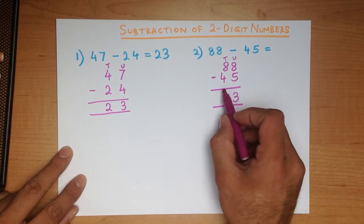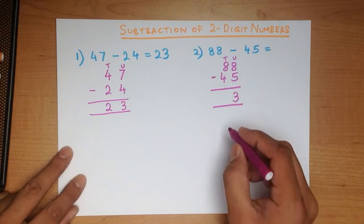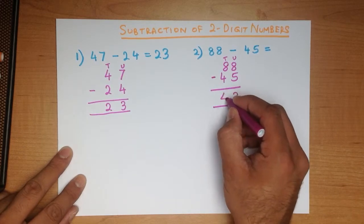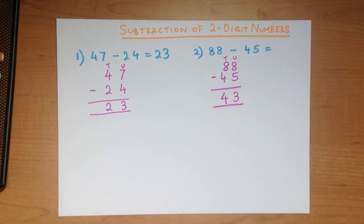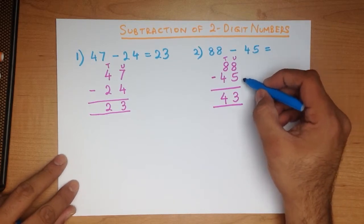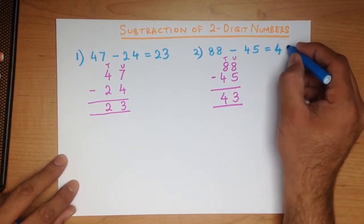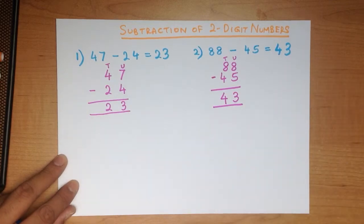Now we subtract the tens column. What is 8 minus 4? That's right, it is 4. And that is our answer — 88 minus 45 is 43. Nice and easy.